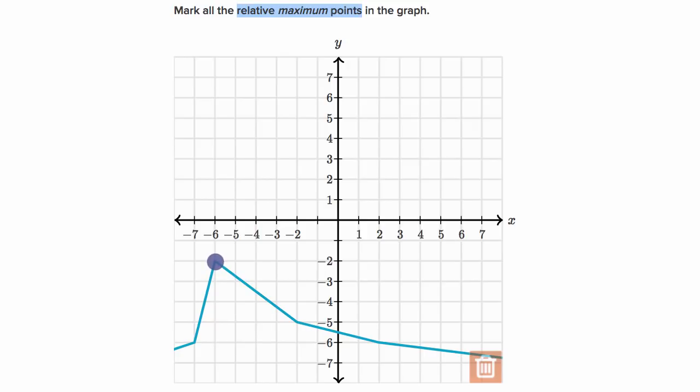This point over here, which looks like a peak of a mountain, and that's a pretty good giveaway if it looks at the top of a hill or a peak of a mountain for a relative maximum point, this looks like a really good candidate. If we move to the right a little bit, we get lower values for our function, and if we move to the left a little bit, we get lower values for our function, and so this is a relative maximum point.